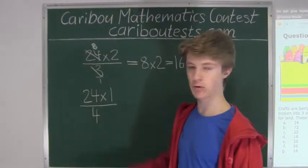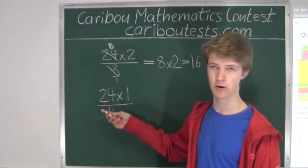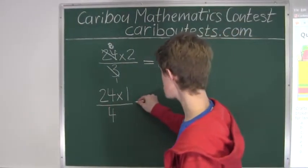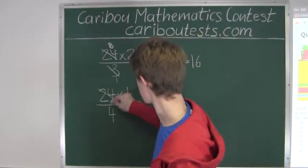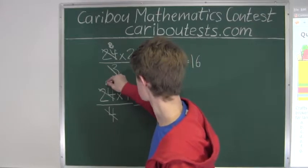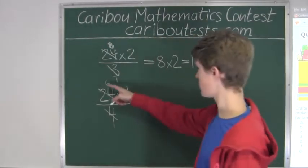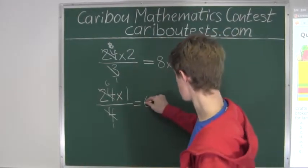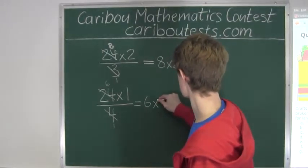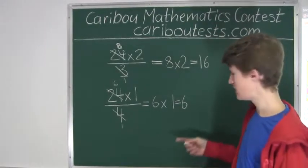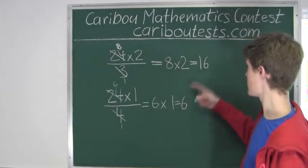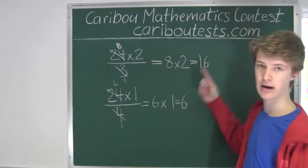24 and again we will cancel out whatever we can so that we can deal with smaller numbers. Now the 24 and the 4 cancel out to just 6 and 1 so that we have 6 times 1 which is equal to 6. So therefore we need 6 green crayons and 16 blue crayons.